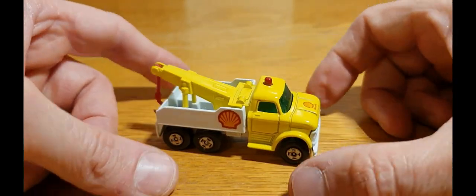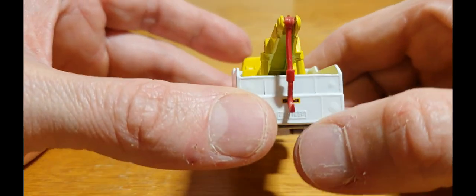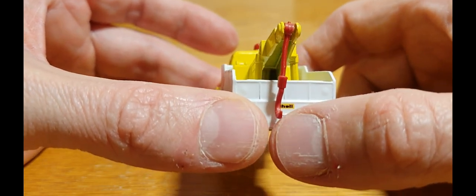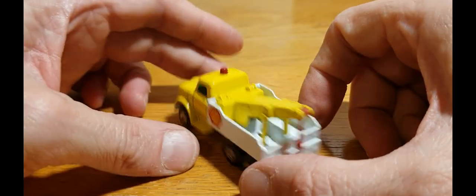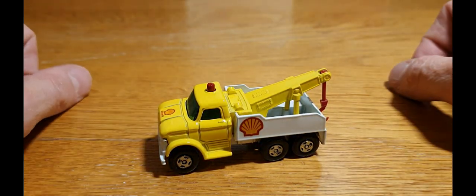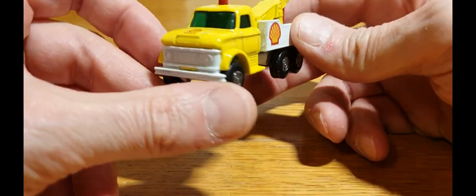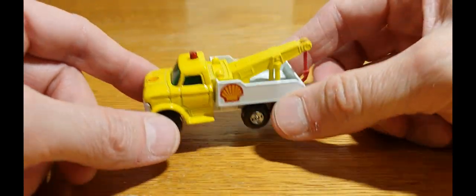Obviously it's had a paint job with Shell tampos on the side and the front, as you can see, and obviously again around this side and a little miniature one on the back underneath the hook there.